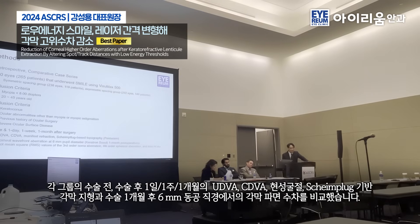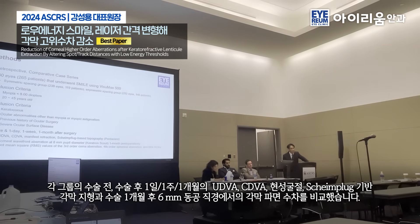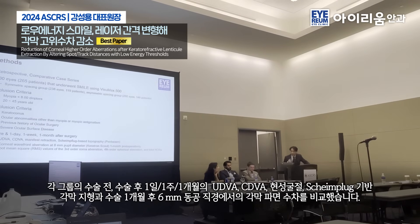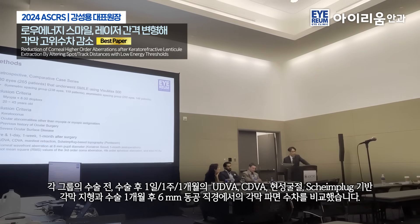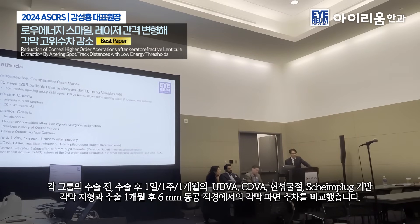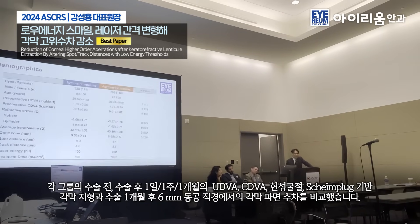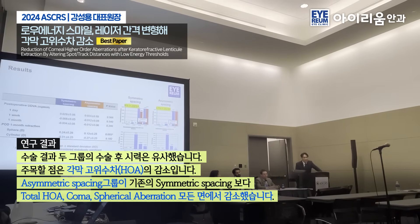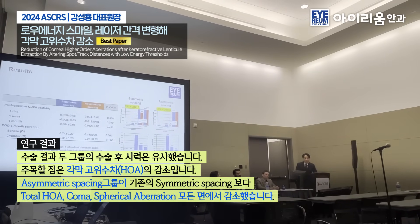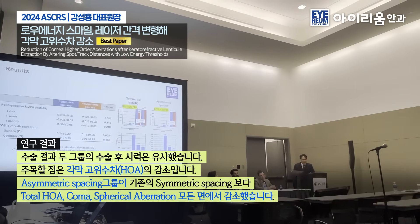With a retrospective design employing just over 500 eyes, the usual inclusion and exclusion criteria were applied. At six millimeters, the Cassini Scout was used to obtain corneal high-order aberrations at one day, one week, and one month. Visually, outcomes were not very different at those time points.